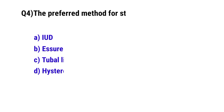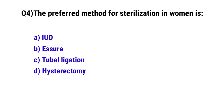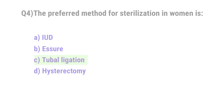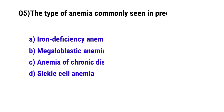Question number four: The preferred method for sterilization in women. The correct option is C, tubal ligation.